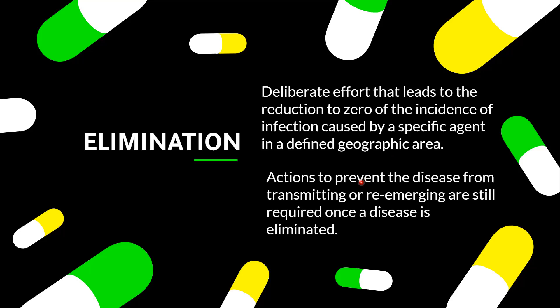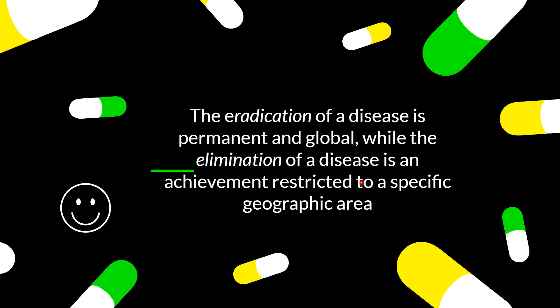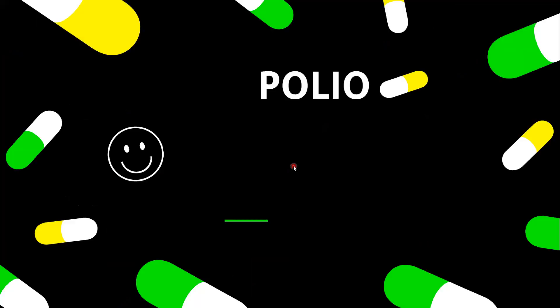If a disease is eliminated it can re-emerge, so we have to constantly be on our toes to prevent that. The key difference between eradication and elimination is that eradication is permanent and global, whereas elimination is restricted to only a specific area — eradication is on a worldwide scale, while elimination may apply to a smaller area like a single country.